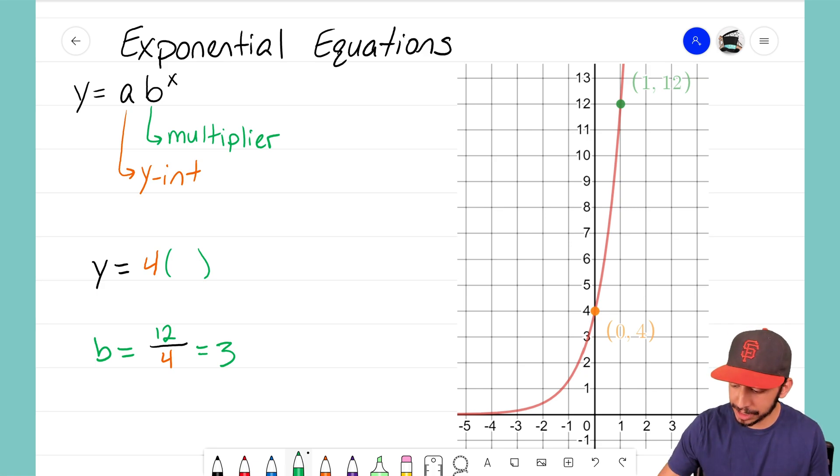So the last step is to put that into that equation for our b term, put our x as our exponent, and that right there is the exponential equation that matches this exponential graph.